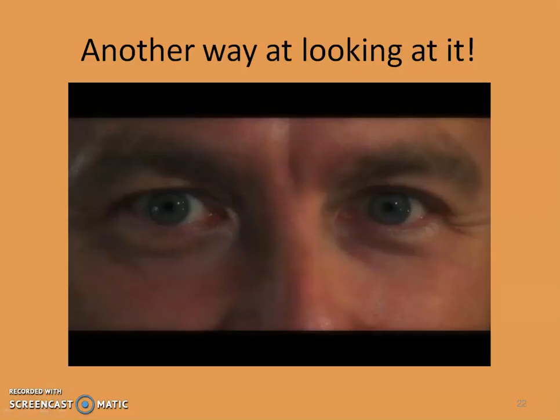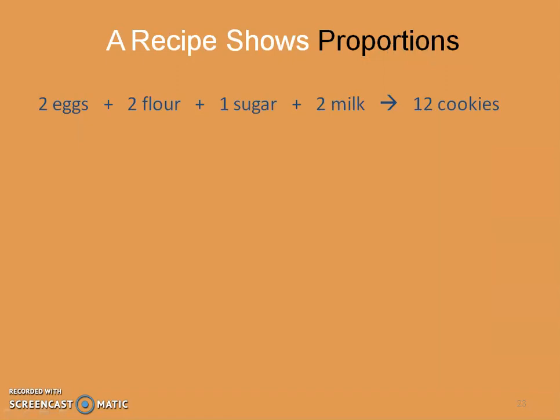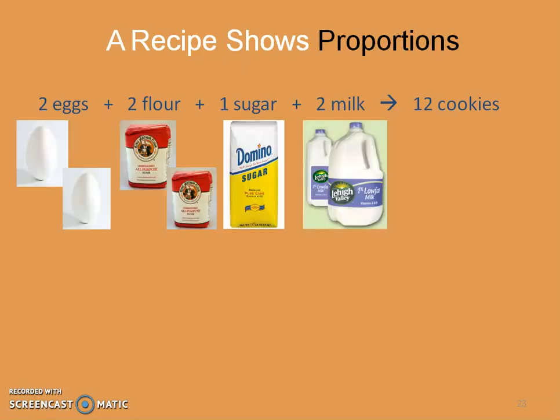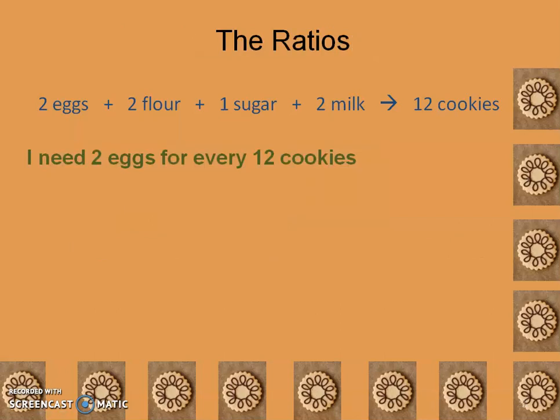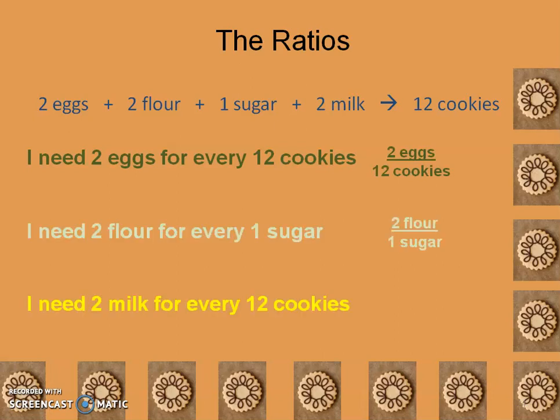All right guys so here's just a different way of looking at it. So guys going back to the recipe, you know I like to relate everything to food right. So if I have a recipe for two eggs and two flour and one sugar and two milk will give me those 12 cookies, then these are all just going to be ratios right or proportions 2 to 2 to 1 to 2 to 12. Well guys if I look at this, if I need two eggs for every 12 cookies, that's just a ratio.